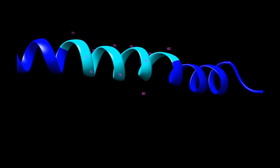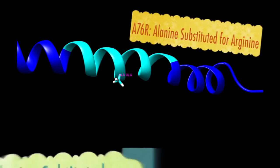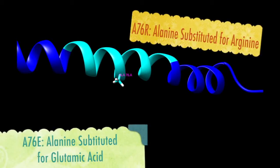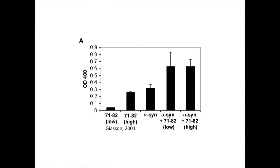To further confirm the importance of this hydrophobic region in fibrillogenesis, a single residue in the middle of this region, alanine-76, was substituted with either a positively charged arginine or negatively charged glutamic acid residue, denoted as A76R and A76E mutations. Adding a charged amino acid in the middle of this hydrophobic sequence, in vitro, greatly decreases the rate of alpha-synuclein aggregation, indicated in red. Synthetically made proteins comprised of this 12 amino acid stretch self-aggregate to form filaments, as indicated by OD-400, which measures the degree of fibrillization.